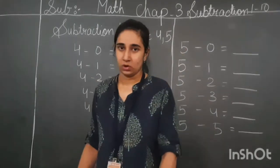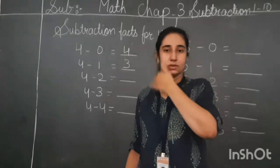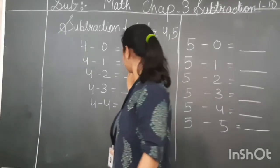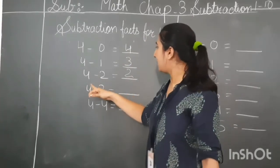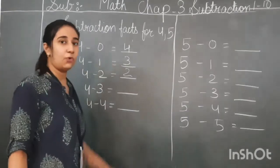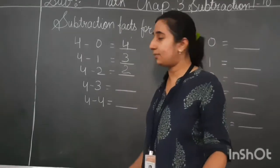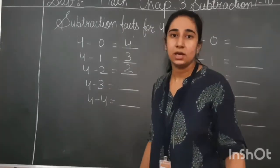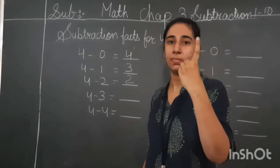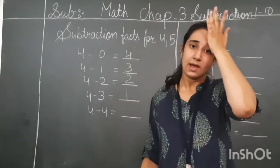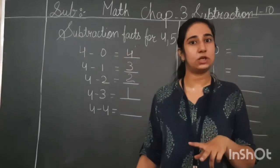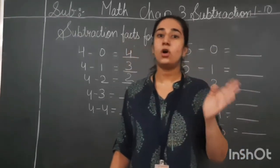Four minus two: keep four in your mind, show two in your fingers, count before four — three, two. So two is the answer. Four minus three: keep four in your mind, show three in your fingers, count before four — three, two, one. So one is the answer. Four minus four: when we subtract two same numbers, we get zero. One minus one is zero, two minus two is zero, three minus three is zero, four minus four is zero.